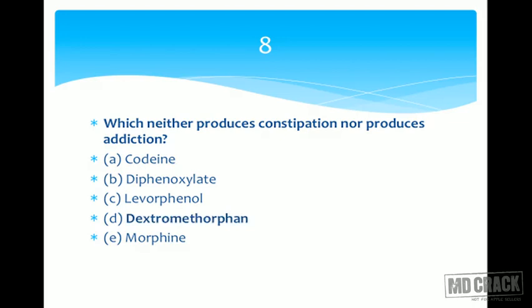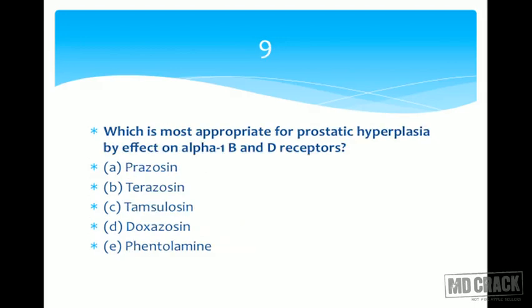Question number nine: which is the most appropriate drug to treat prostatic hyperplasia by effect on alpha-1b and alpha-1d receptors? Options are prazosin, terazosin, tamsulosin, doxazosin, and phentolamine. We are in the chapter of alpha blockers. Prazosin is a long-acting antihypertensive. Phentolamine is short-acting and used by intravenous route in emergencies, so it is ruled out for prostatic hyperplasia.